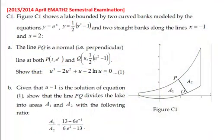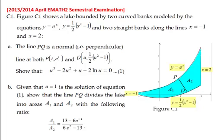Let's take a look at this question. We are given that the lake is bounded by the equations as shown, with PQ given, both P and Q normal. The question requires us to prove these highlighted equations. Starting with part A, we need to show u cubed minus 2u squared plus u minus 2 ln u equals 0, where u appears in the coordinates of Q.